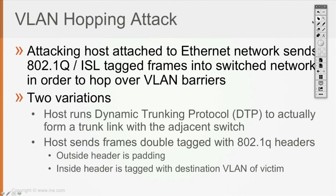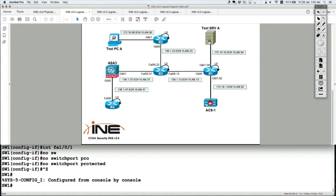The attacker can send frames with any possible tag value, targeting specific destinations in different VLANs. It can launch attacks against hosts in VLANs 10 and 20 without sending traffic to a layer 3 device. The second variation is that the attacker sends frames double-tagged with two .1Q headers.